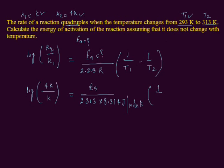1 upon T1, T1 is 293, minus 1 upon T2, T2 is 313. We mention its unit is Kelvin. The Kelvin units will cancel out.